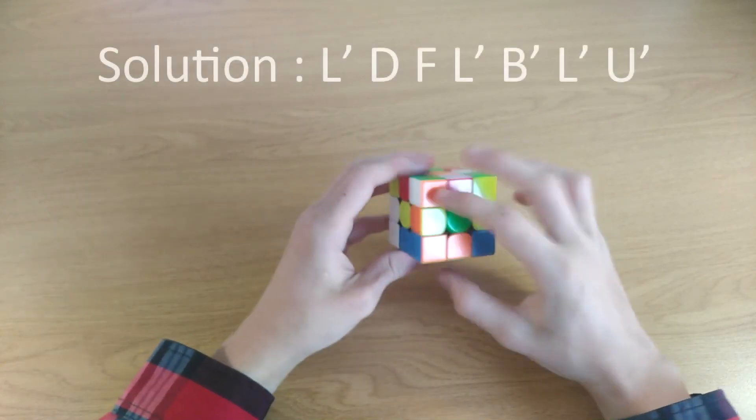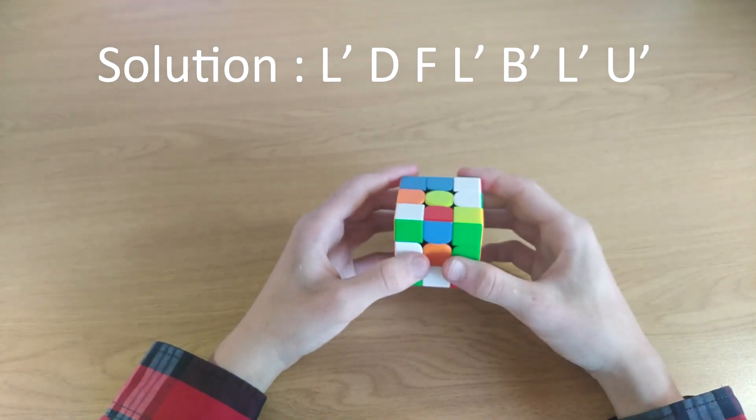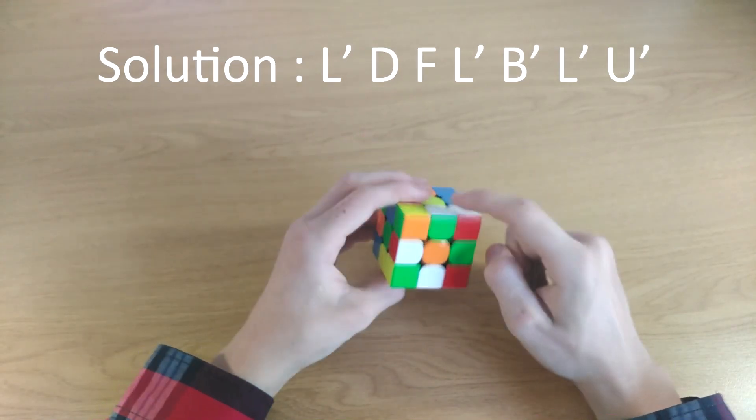Then we can do a D like this because the green needs to go in here. So we can insert now this one with an F.